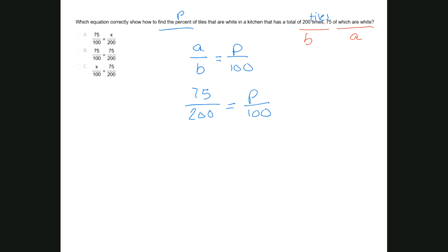Looking at our answer choices: option A has 75 over 100 equal to X over 200, which does not match our setup. Option B shows 75 over 100 equal to 75 over 200, but it is missing a variable. Option C shows X over 100 equal to 75 over 200, which matches our P over 100 structure. So we choose option C — this is the proportion that represents 75 white tiles out of 200 total tiles.